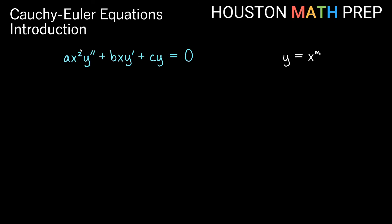If we assume that a homogeneous Euler equation has a solution of the form x to some power m, then we should be able to plug it into the equation and get a true statement. We need y prime and y double prime: using the power rule, y prime is m times x to the m minus one. Doing the same thing again for y double prime, we get m times m minus one as a quantity, times x to the m minus two.